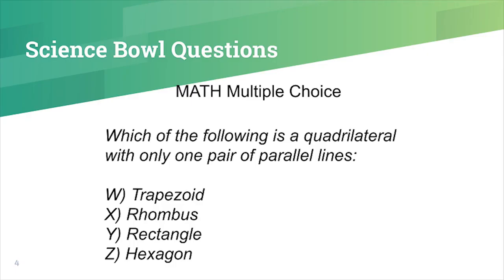Let's practice one question. Mathematics, multiple choice: Which of the following is a quadrilateral with only one pair of parallel lines? W, trapezoid. X, rhombus. Y, rectangle. Or Z, hexagon. The answer was W, trapezoid.